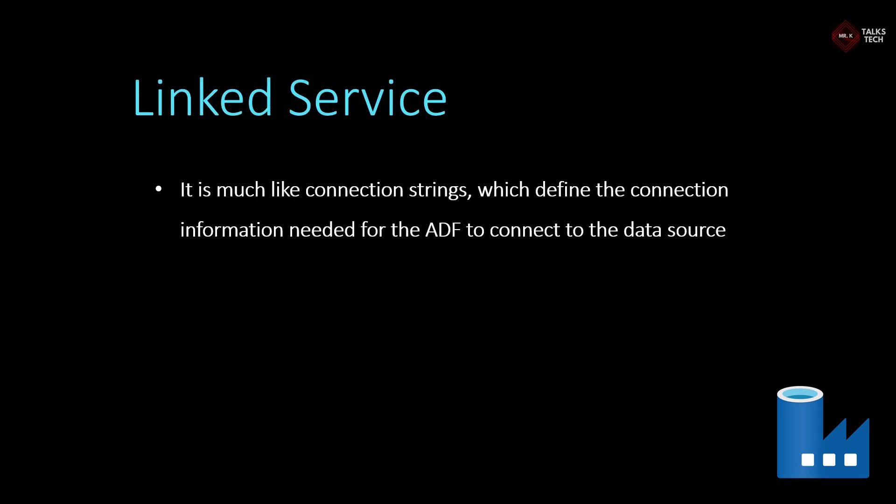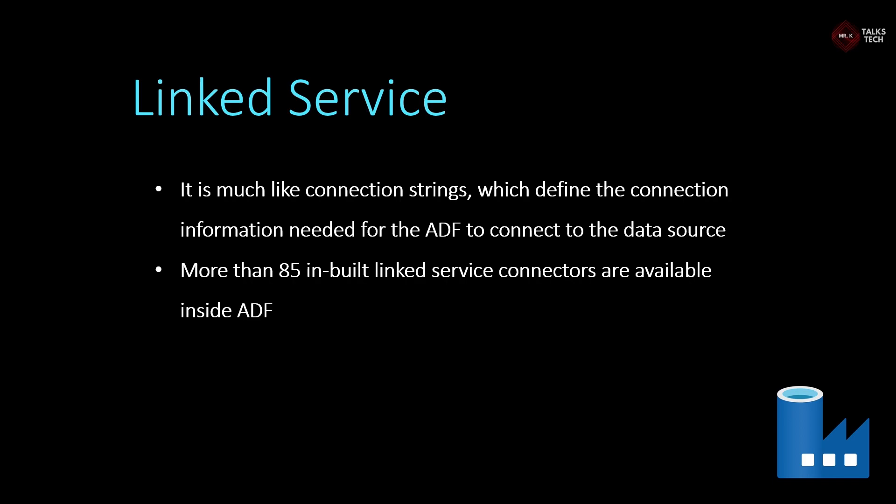Now let's look at the link service. A link service is much like a connection string — it defines what data source is connected and the compute power. The connection details include, for example, SQL database, connection string, username, and password. More than 85 inbuilt link service connections are available in ADF. For example, ADF is connected to a data lake via a prebuilt link service connection. SQL database and NoSQL database connections are all available in ADF.